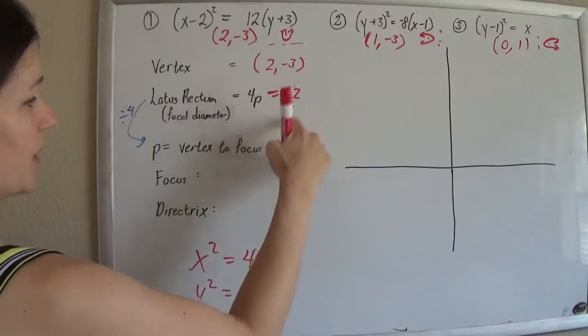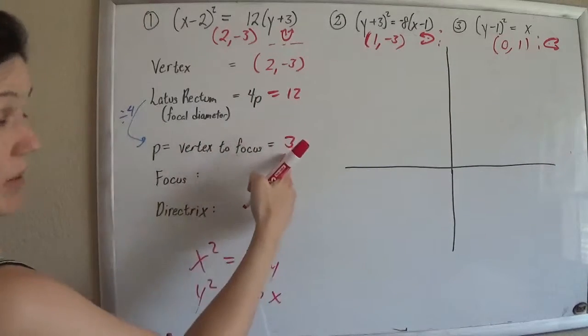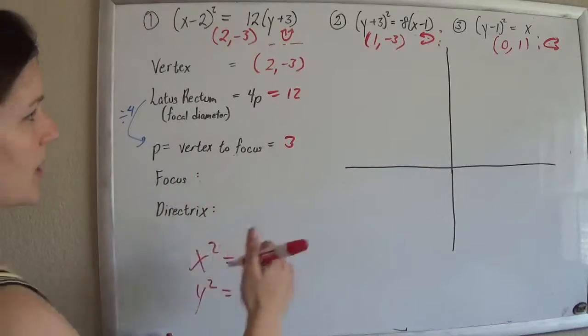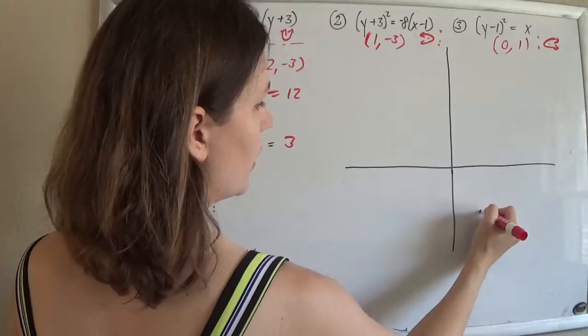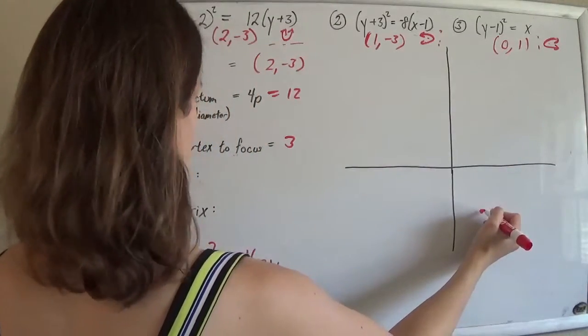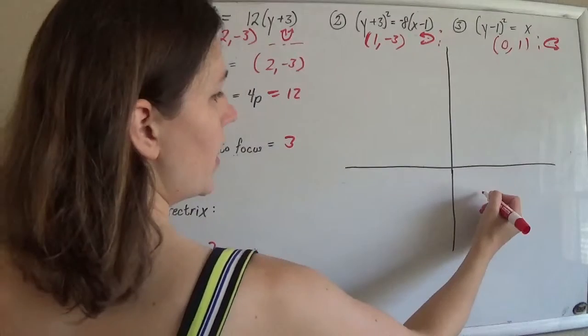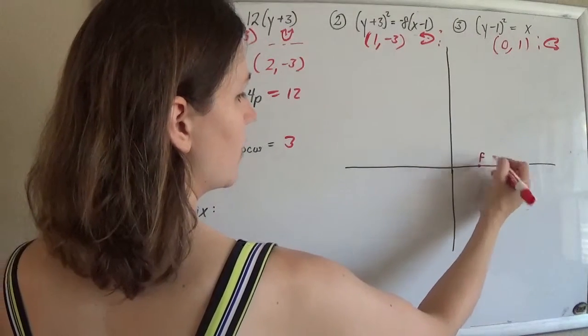So 4p is just that 12. If that's 4p, divide by 4 to get p. p is 3, and that's the distance from the vertex to the focus. So if my vertex is at 2, negative 3, and my p is 3, and I'm going up, I'm going to go up 1, 2, 3 to get my focus.